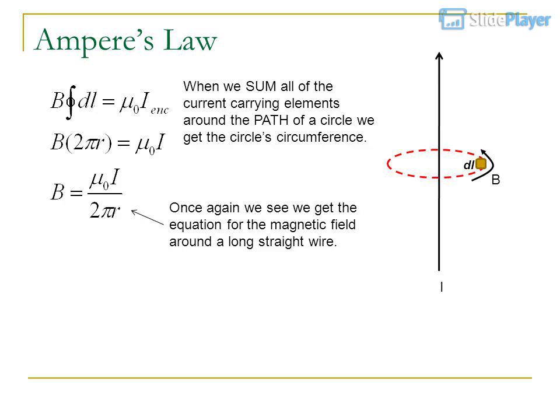Ampere's law. When we sum all of the current carrying elements around the path of a circle, we get the circle's circumference. Once again, we see we get the equation for the magnetic field around a long straight wire.